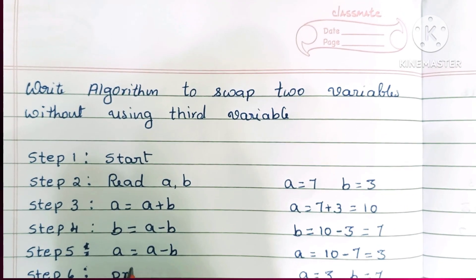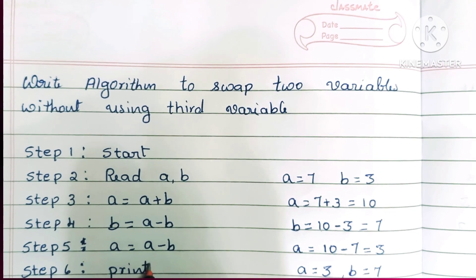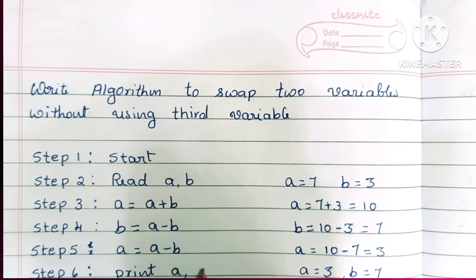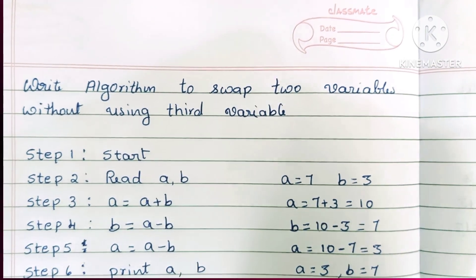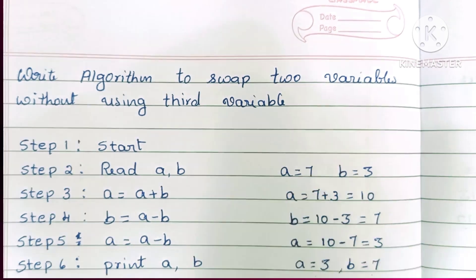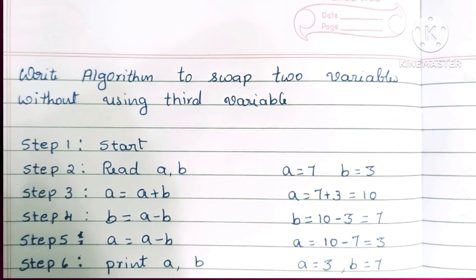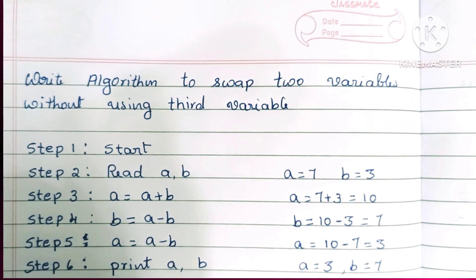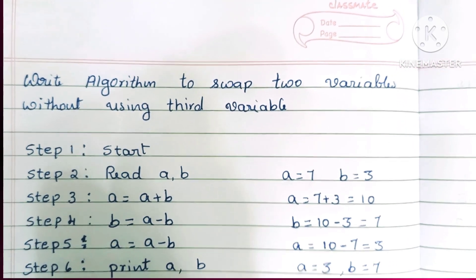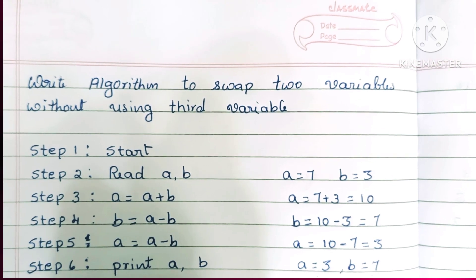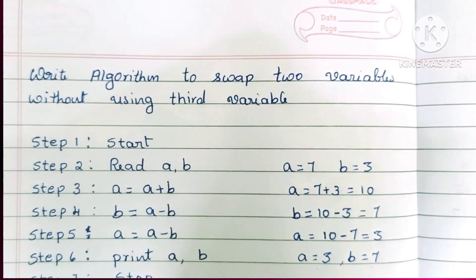In step 6, we print the values of a and b — that is, the swapped values. In step 7, we stop the algorithm using the stop statement.